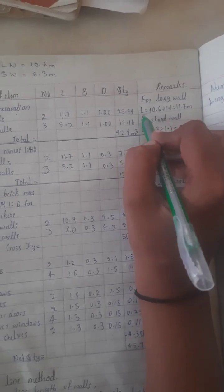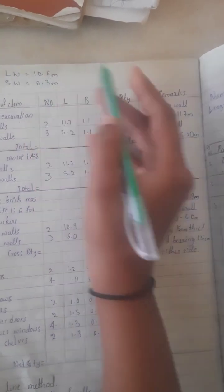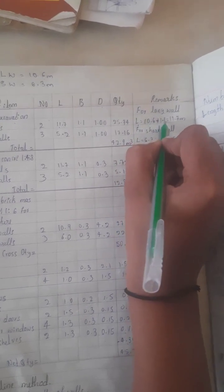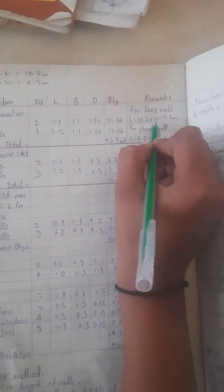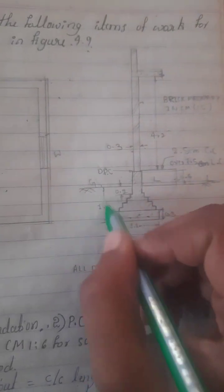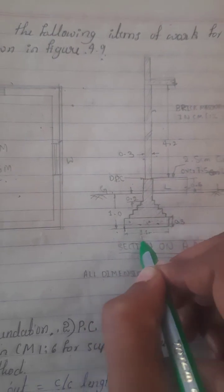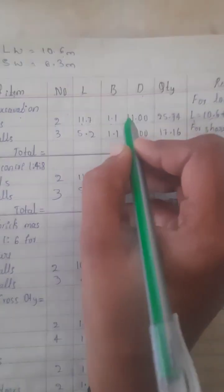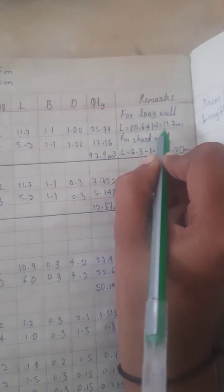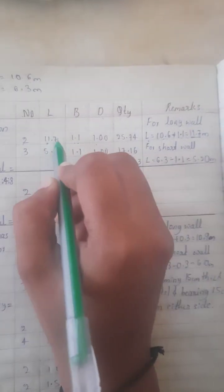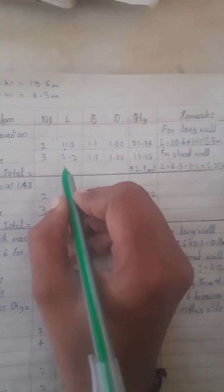For the long wall, we have 2 numbers and the long wall length is 10.6 meters. We calculate breadth and depth. The breadth includes extra width on each side, so breadth is 1.1m. Total length including extra width is 11.7 meters. Depth is 1 meter. So we multiply to get 25.74 cubic meters.